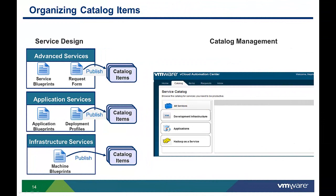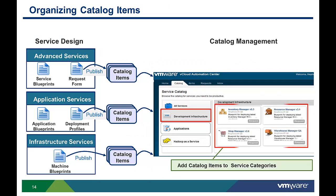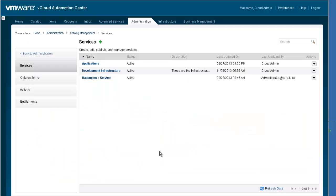After configuring the service categories, we will now associate the relationships between each service category and the catalog items that reside in that category. Note that each catalog item can only be in one service category. To associate catalog items with service categories, under the Catalog Management commands, click the Catalog Items menu option.